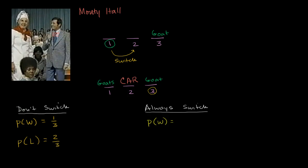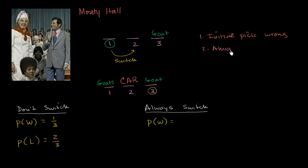This insight actually came from one of the middle school students at a Khan Academy summer camp — it's a fabulous way to think about this. If your initial pick is wrong and in step two you always switch, you will land on the car. Because if you picked one of the wrong doors, they're going to have to show the other wrong door, and so if you switch, you're going to end up on the right answer.